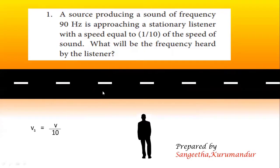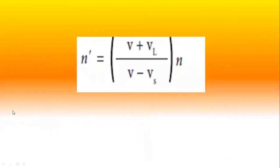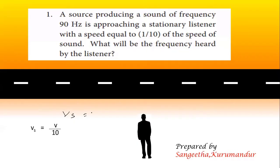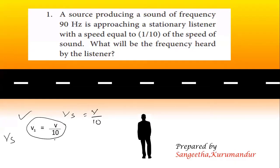We know the speed of sound is 330 meters per second. The data given is: Vs is equal to V by 10. The source is moving at velocity V/10, that is 1/10 of the velocity of the sound waves. This is the only data given here.